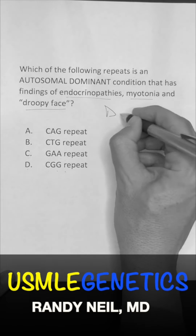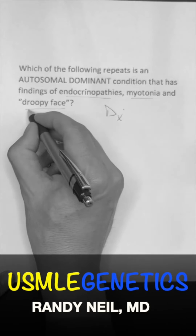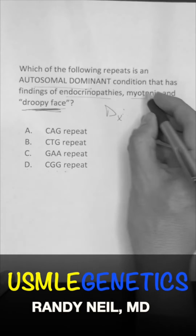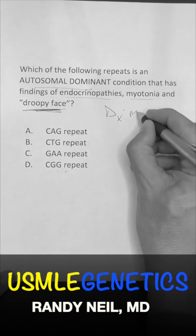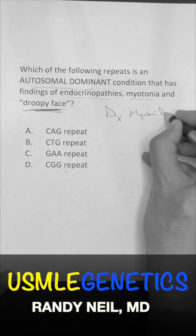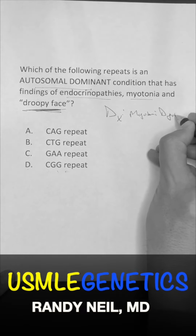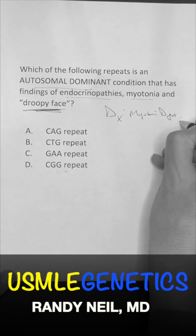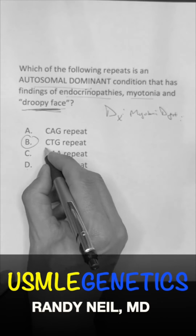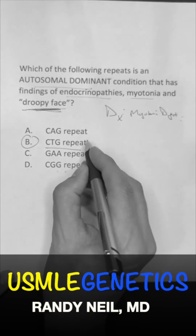What's my diagnosis? A droopy face is kind of the giveaway — autosomal dominant — you better be thinking myotonic dystrophy. Myotonic dystrophy is going to be a CTG repeat.